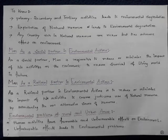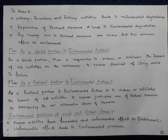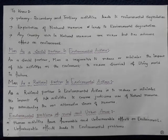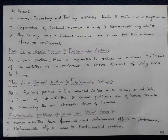It is man who can decide what to do, for whom to do, and how much to do, so that natural resources can be preserved for future generations. Man as a rational partner in environmental actions means reducing or minimizing the impact of his activities to ensure judicious use of natural resources by introducing the use of alternative sources of resources.